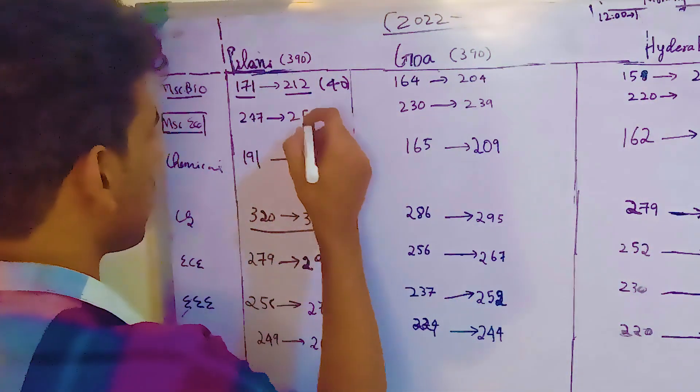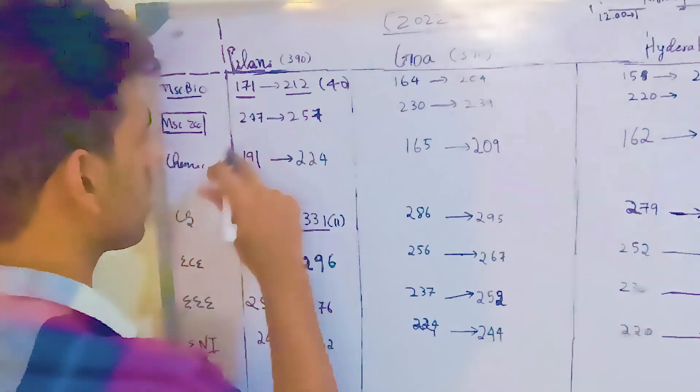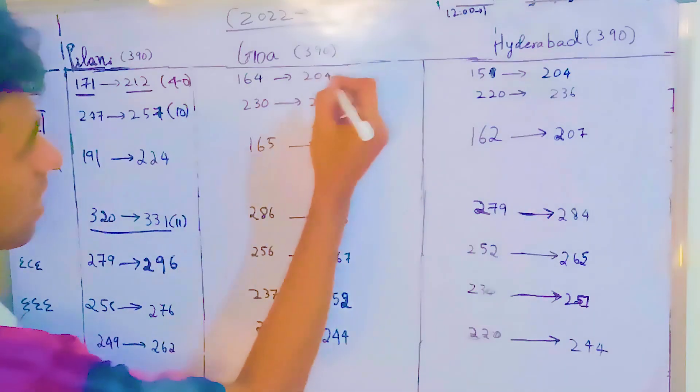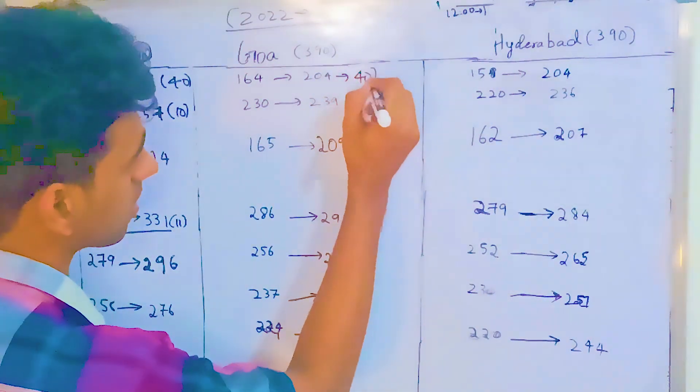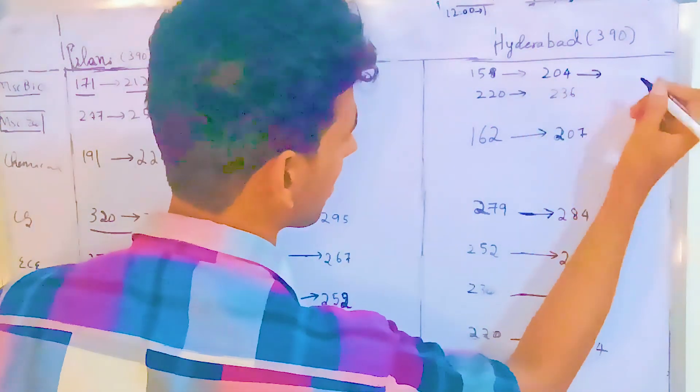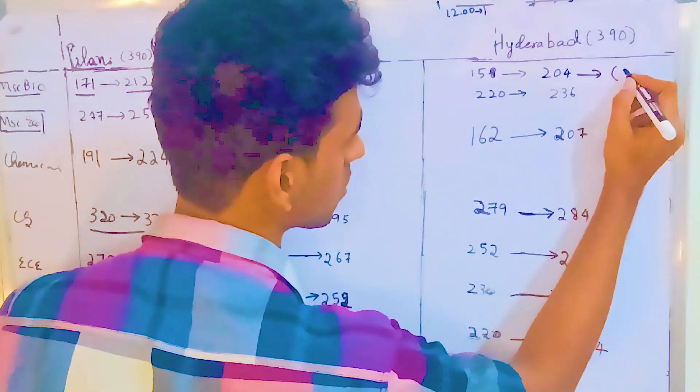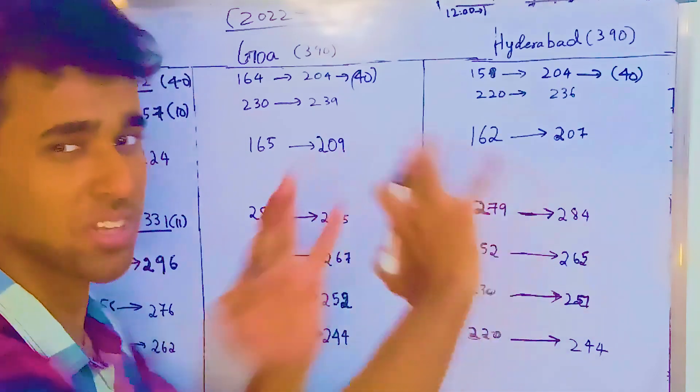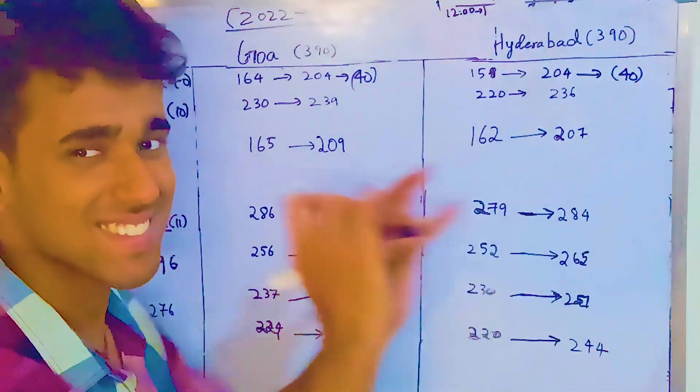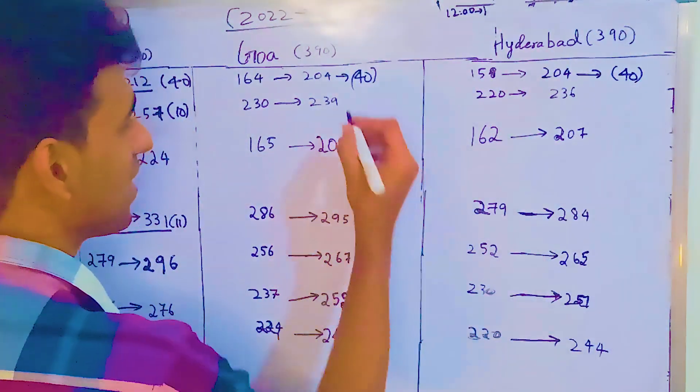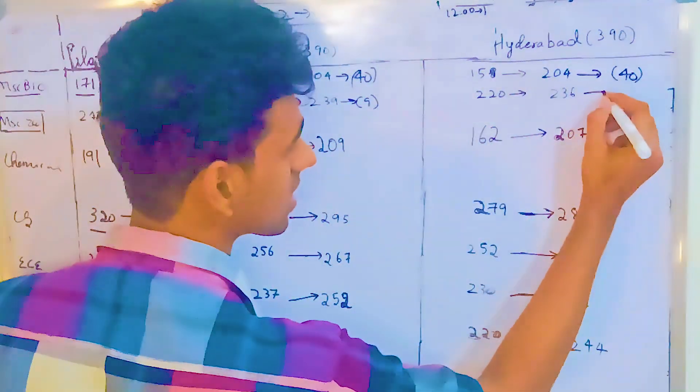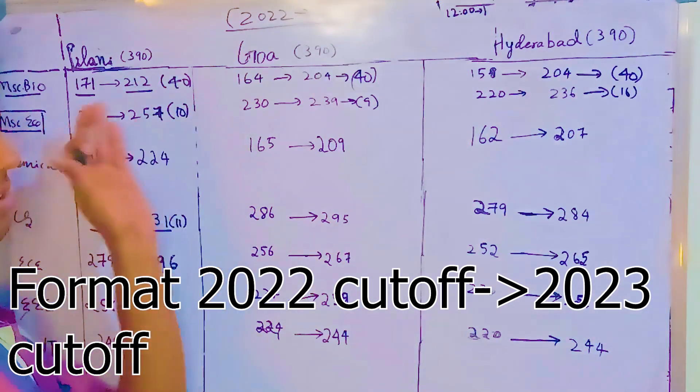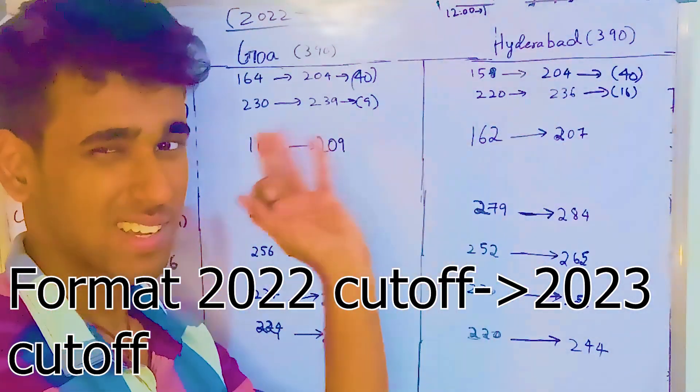If you wanted to get into MSc Eco, there's almost a 10 mark gap from 2022 to 2023. Similarly in Goa, there's a 40 mark gap here. These are approximate values I'm choosing. It's not because I don't know math, these are just approximate values. Here's a 9 mark difference, and here is a 16 mark difference. On average, the cutoffs for MSc Bio have increased a lot.